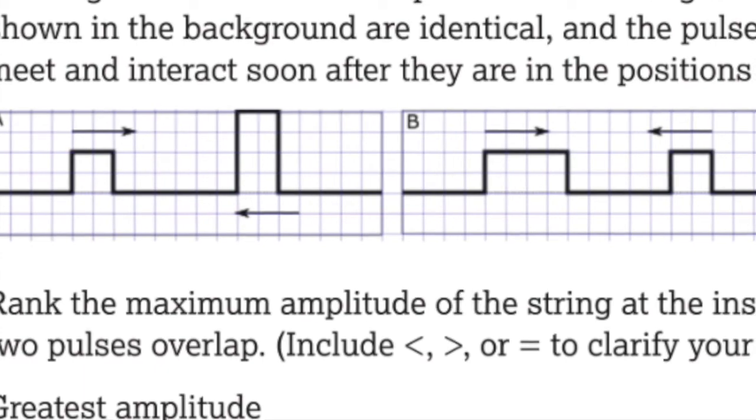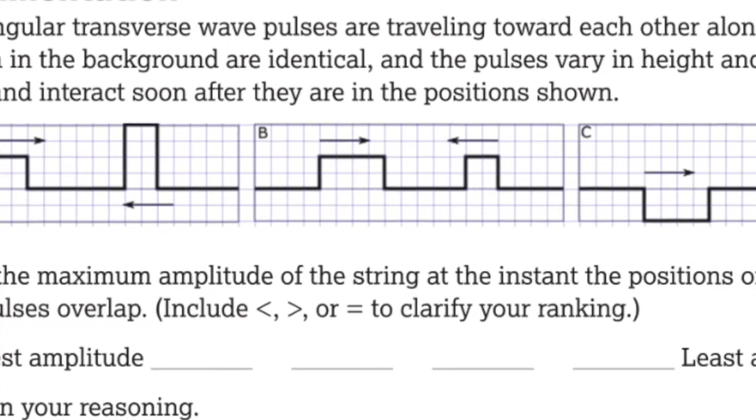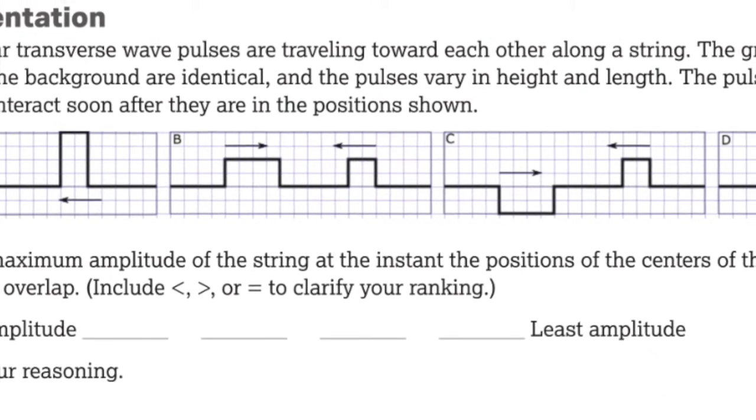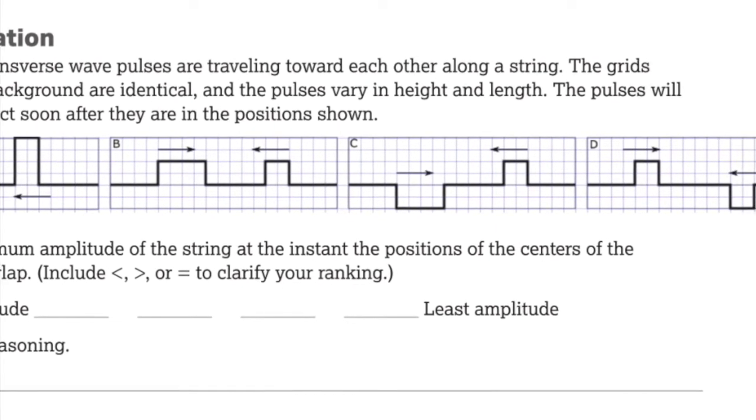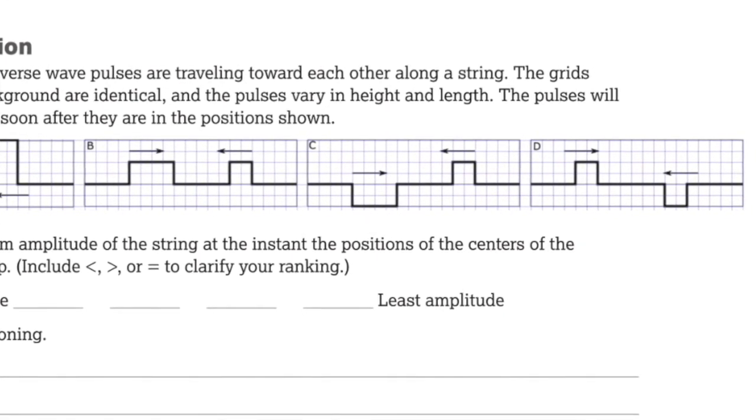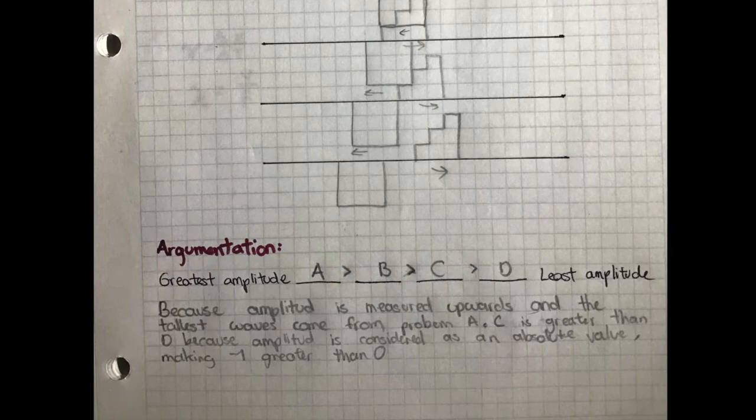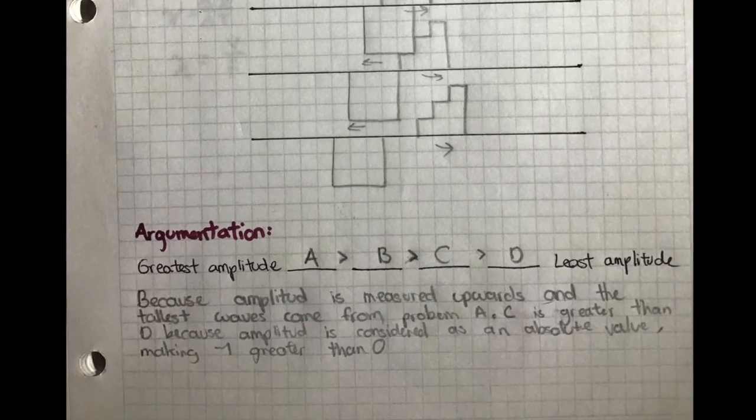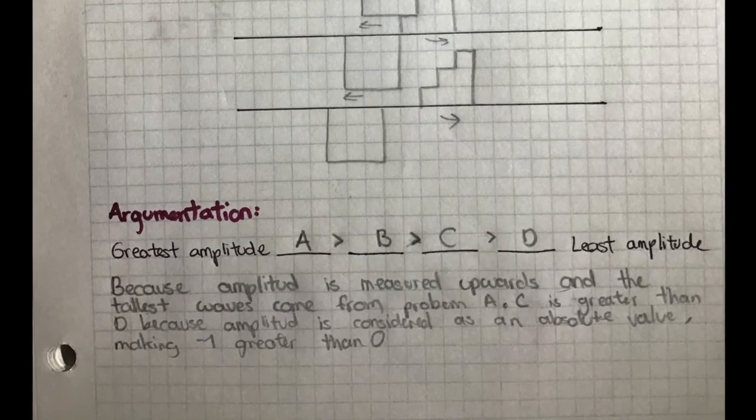Include smaller than, greater than, or equal to symbols to clarify your ranking. Then you show us how to organize the greatest amplitude to the least amplitude. After organizing the wave pulses in the previous exercise, we can understand how they change and how we take amplitude as an absolute value throughout their overlappings. In this case, the answer to this problem would be A greater than B greater than C and greater than D, because amplitude is measured upwards and the tallest waves come from problem A. C is greater than D because amplitude is considered as an absolute value, making negative 1 greater than 0.